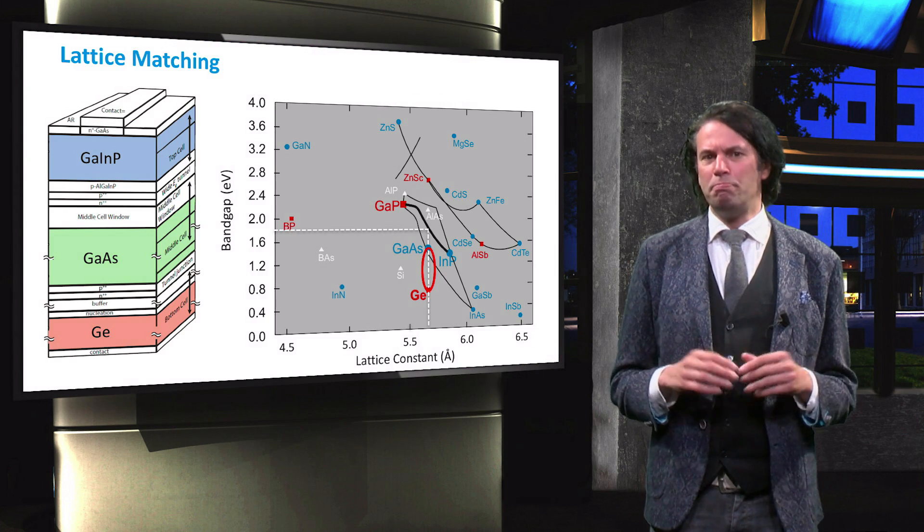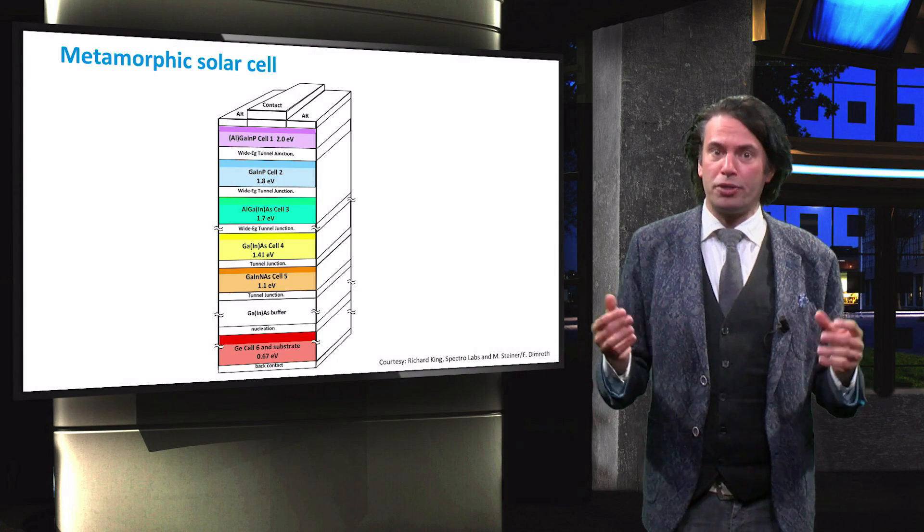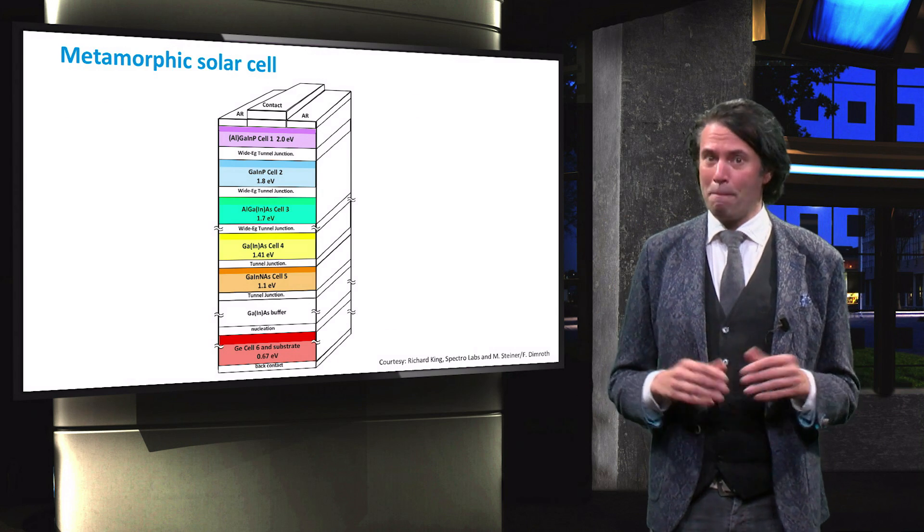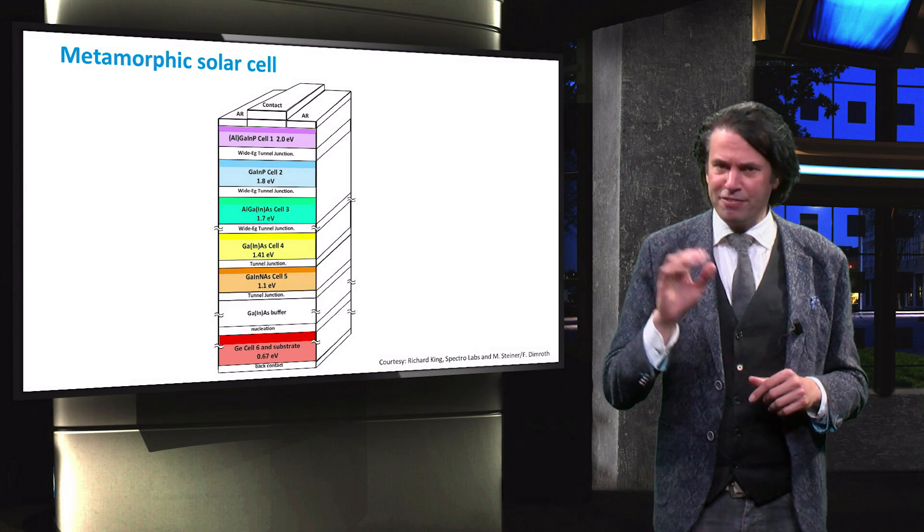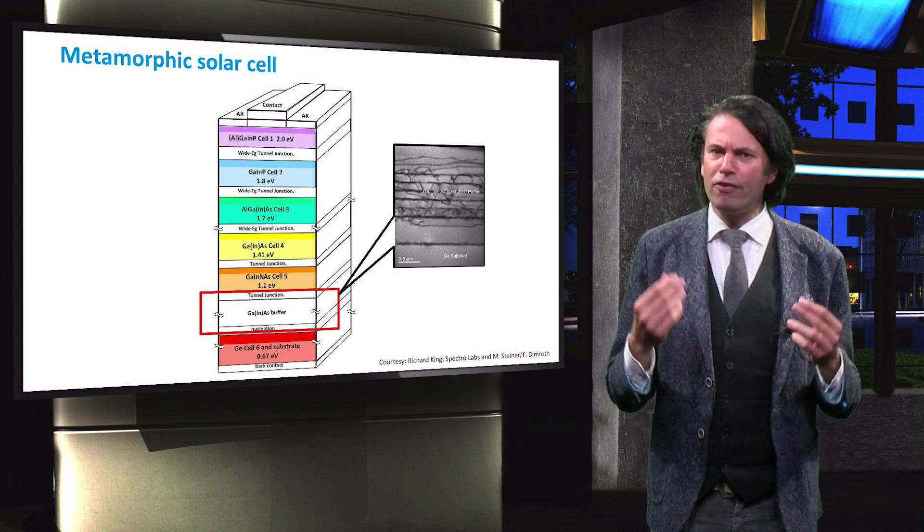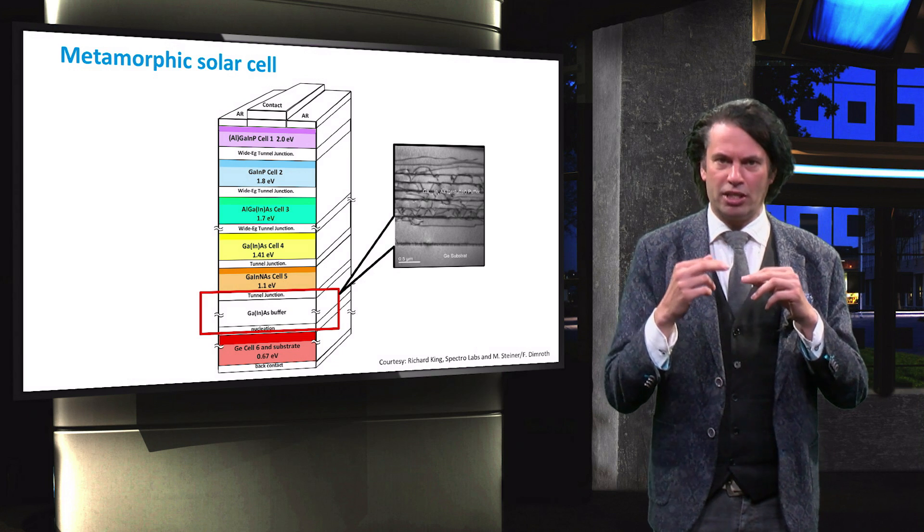Multijunctions with lattice mismatched sub-cells are called metamorphic multijunctions. This picture shows a metamorphic device with 5 separate junctions. Metamorphic devices require buffer layers in between the sub-cells.